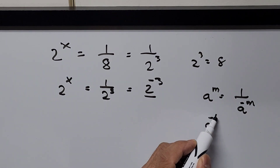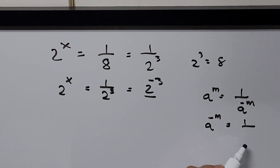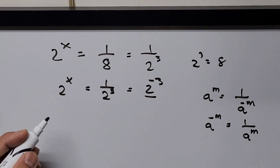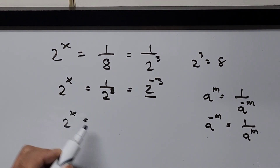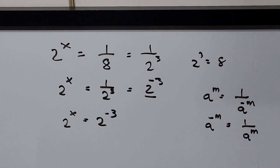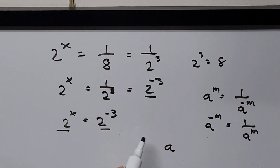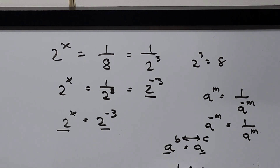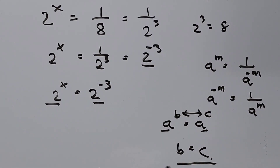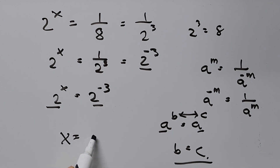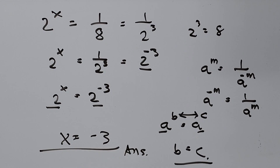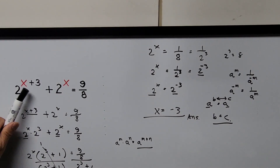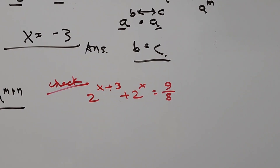Applying the negative exponent rule, the equation becomes 2 to the power of x equals 2 to the negative 3 power. Since we have the same base, we use the rule that if a^b equals a^c, then b equals c. Equating the exponents, therefore x equals negative 3. To check our answer, we substitute x = -3 back into the original equation 2^(x+3) + 2^x = 9/8.